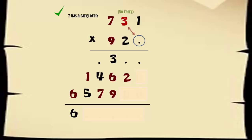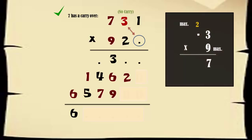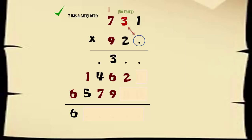3 multiplied by any number can give a maximum carryover of 2. So 7 gets a carryover as either 1 or 2.